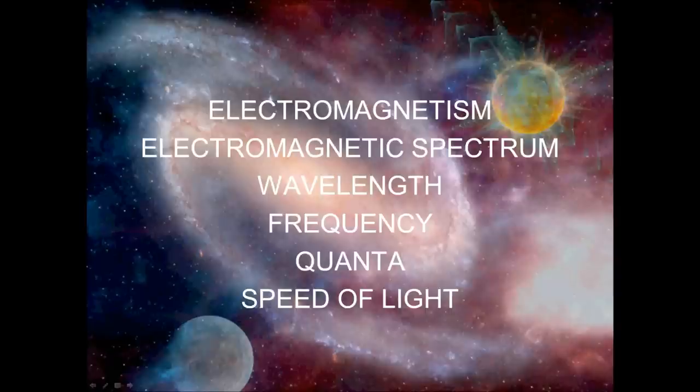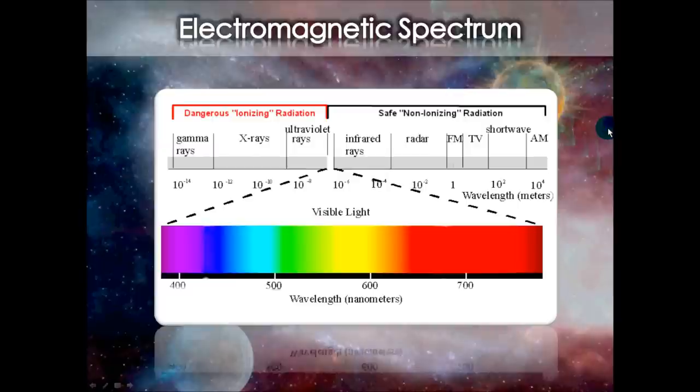Frequency is the rate at which something occurs or is repeated over a particular period of time or in a given sample. Quanta is a discrete finite quantity, in this case the finite quantity of energy proportional in magnitude to the frequency of the radiation it represents. And we'll see an equation that deals with this in a minute. The speed of light, as some of you probably already know, is 180,000 miles per second. It's a universal constant and it places a limit on maximum achievable speed.